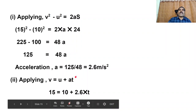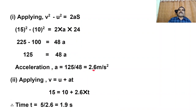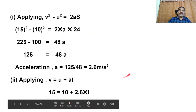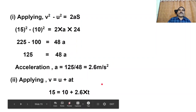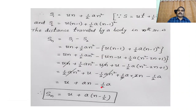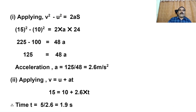To find the time: we know initial velocity, final velocity, and acceleration. Using V equals U plus AT: 15 equals 10 plus 2.6 into T. So 2.6T equals 15 minus 10 equals 5. Therefore T equals 5 by 2.6 equals approximately 1.9 seconds.